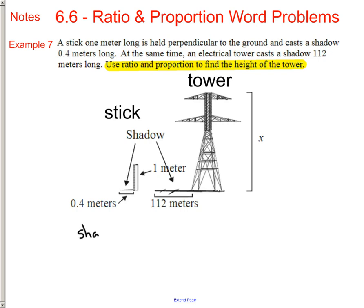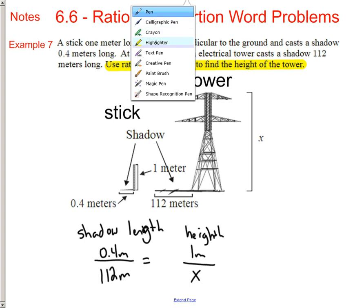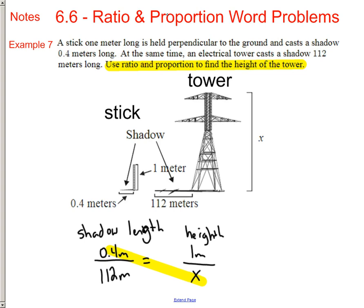Here's the stick right here, one meter tall, and the shadow is 0.4 meters. The shadow of the tower is 112 meters, and instead of writing a question mark, we're going to write an X. We've got slots for four different numbers. We've got three that we can put in, but we've got one that's missing. Let's take a look at the shadow length here and make a ratio of comparing the shadow length to shadow length. The shadow length for the stick is 0.4 meters, and the shadow length for the tower is 112 meters. I know the height, so let's just put a height here.